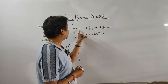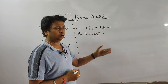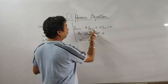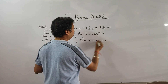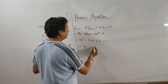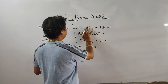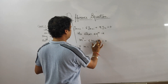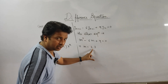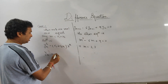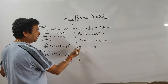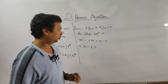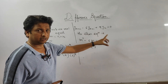For example, consider y_k+2 minus 9y_k+1 plus 6y_k equals zero. Write the characteristic equation: m² minus 9m plus 6 equals zero. When solved, the roots are 3 and 3 — real and equal. So the solution is y_k equals (c1 plus c2·k) times 3^k. Very simple to write the solution when roots are equal.